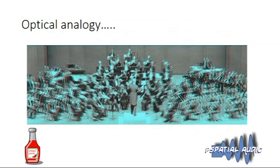Here's an analogy using light: the red components represent low frequencies — narrower — and the blue represents high frequencies — wider. This smearing effect is analogous to chromatic aberration in a lens. So the stereo system based entirely on inter-channel intensity ratios has this aberration at both low and high frequencies.